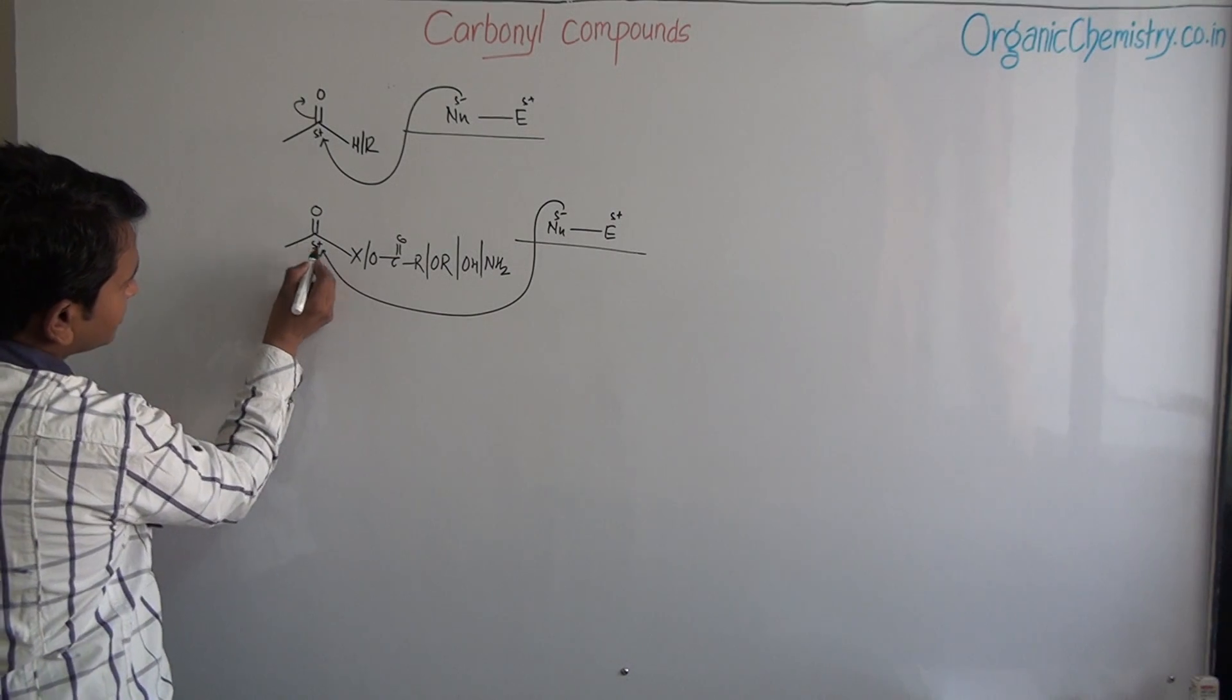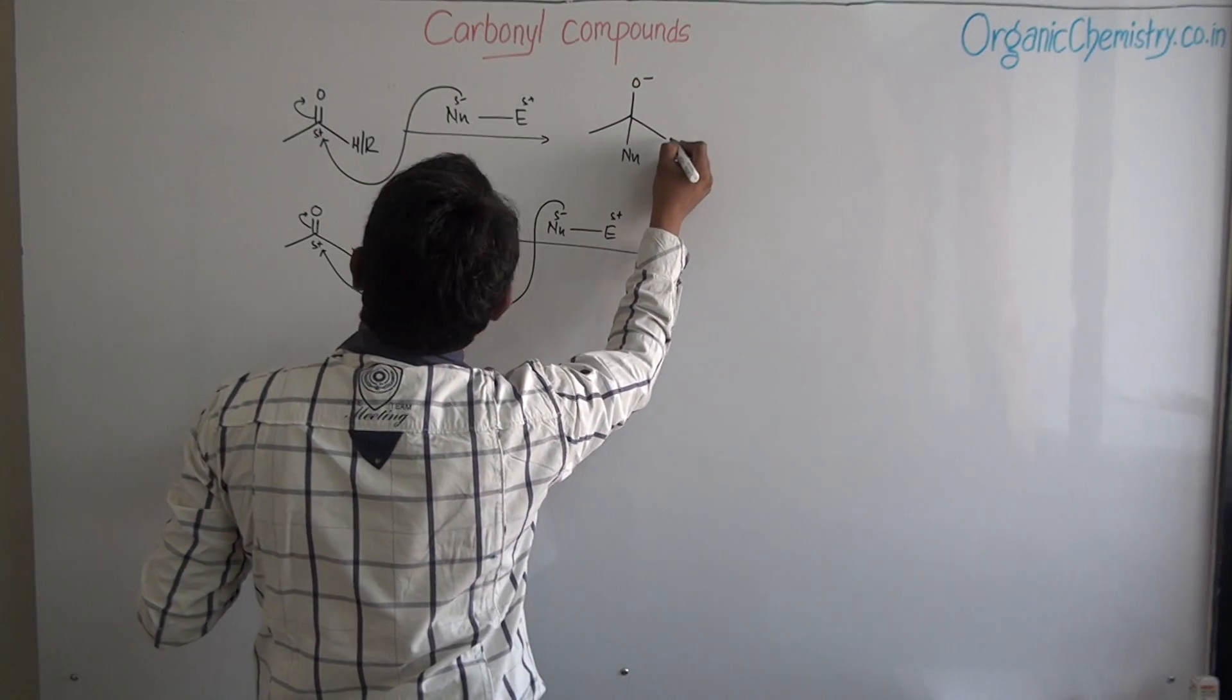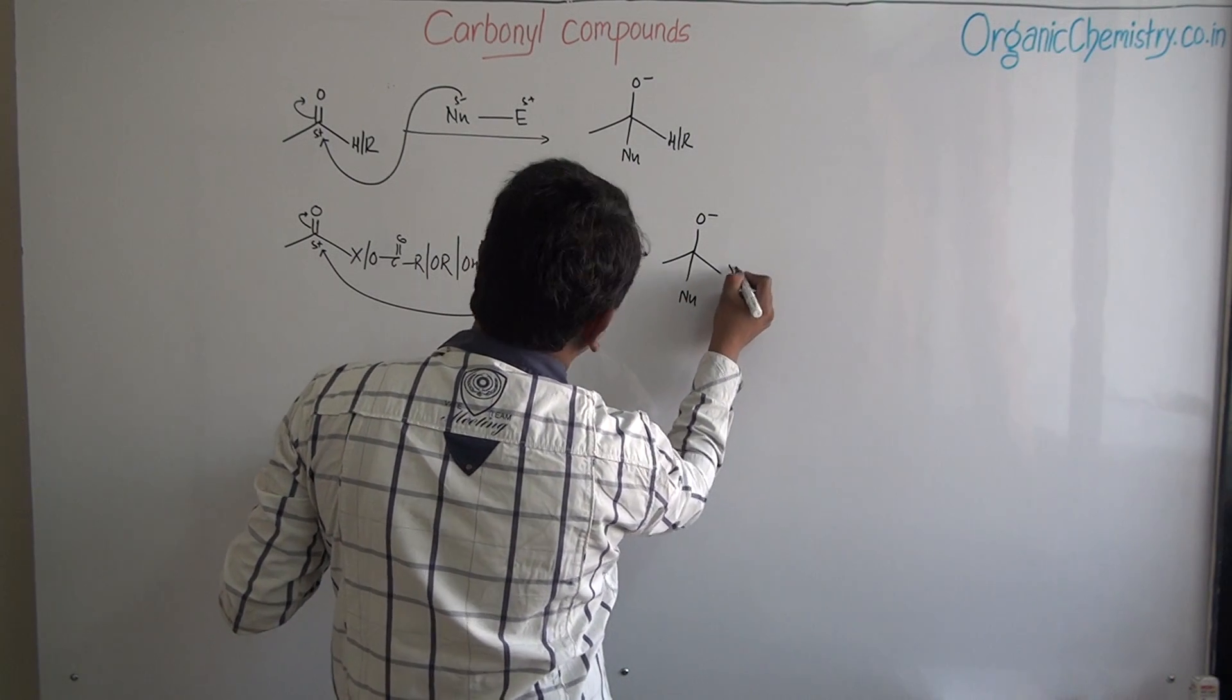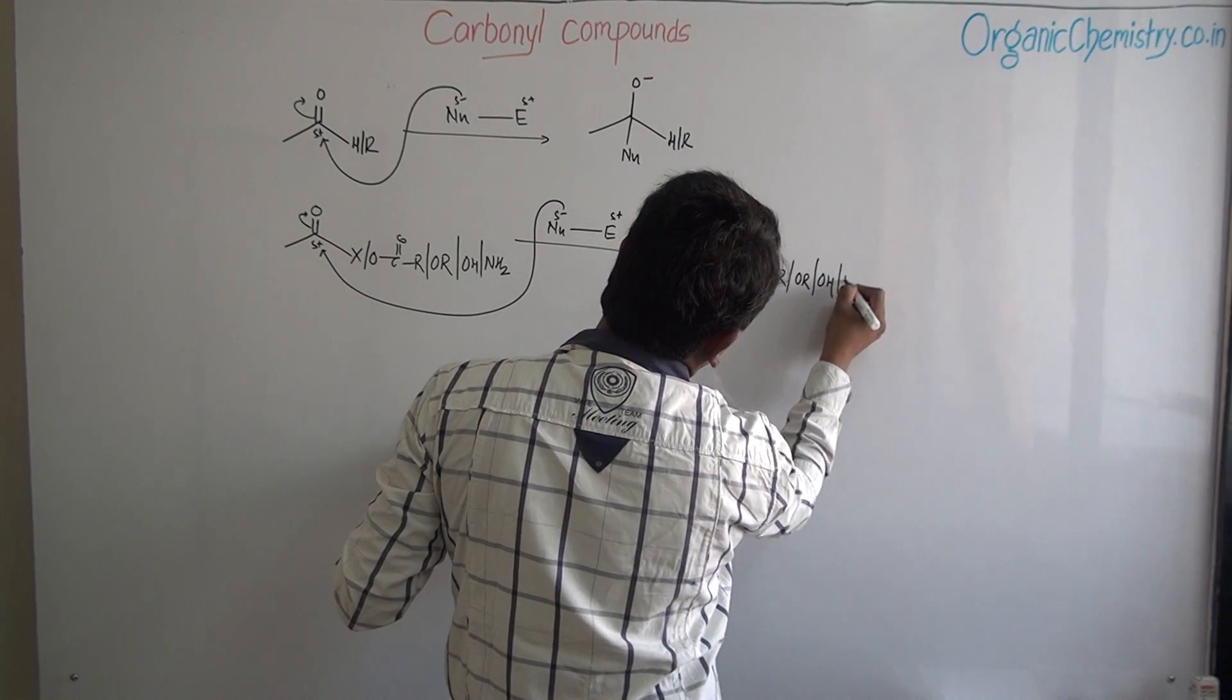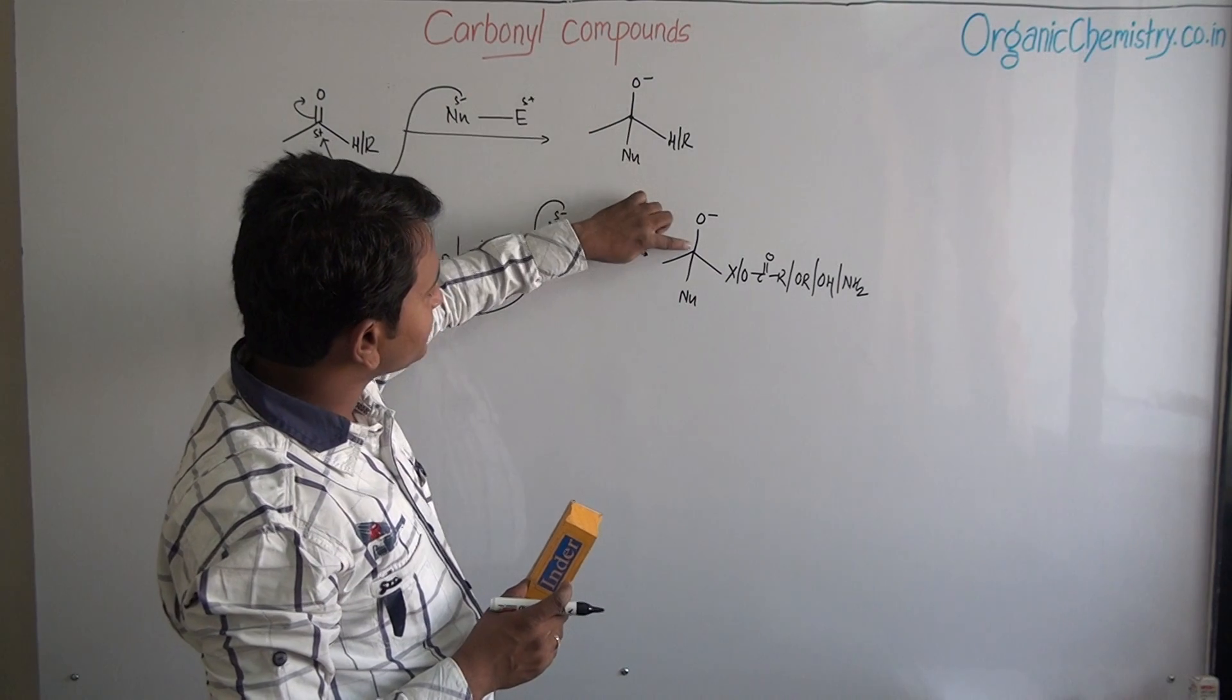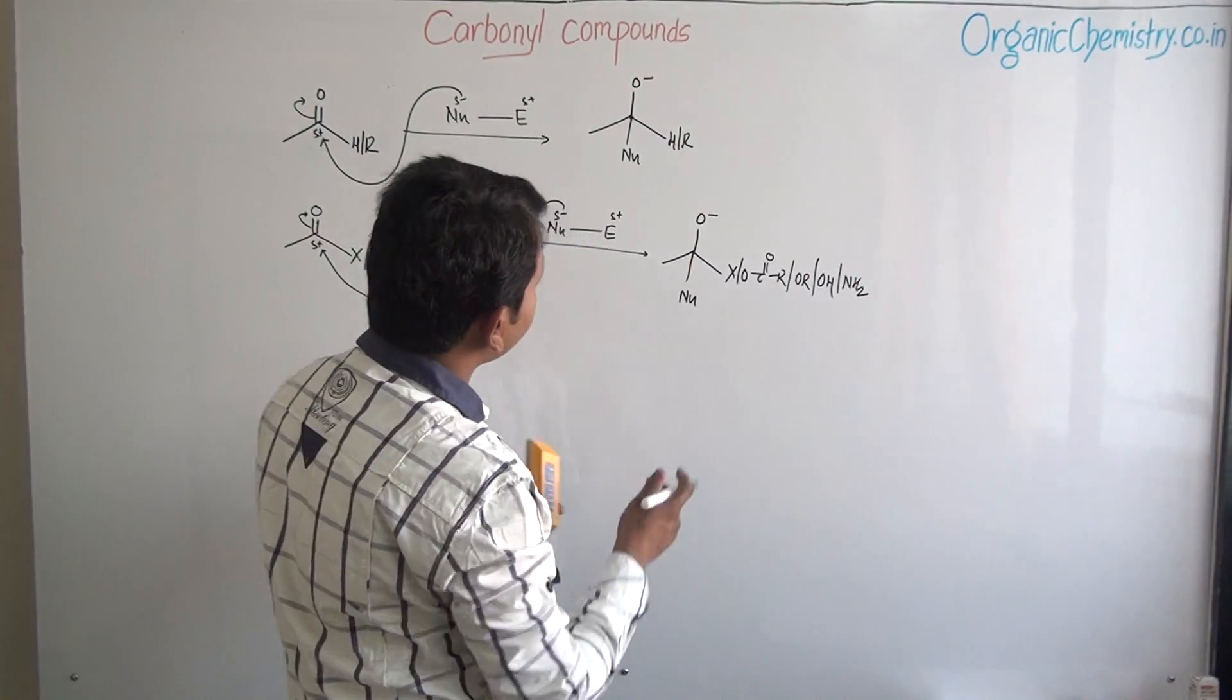Similar to the case here also, nucleophile attacks over this carbon, breaks this pi bond. But next part is this: this will form this type of tetrahedral intermediate. But in this case, the intermediate forms are like this: X, O, C, O, R, OR, OH, or NH2. When we carefully analyze, this particular has only O negative, but this particular has O negative as well as the leaving groups: halogen, O, OR, OH, and NH2. They are the good leaving groups.